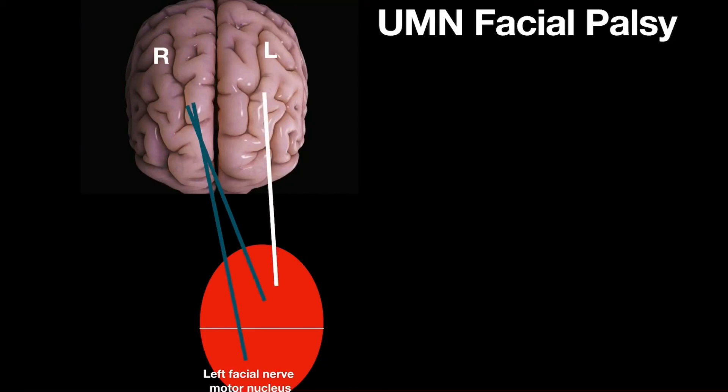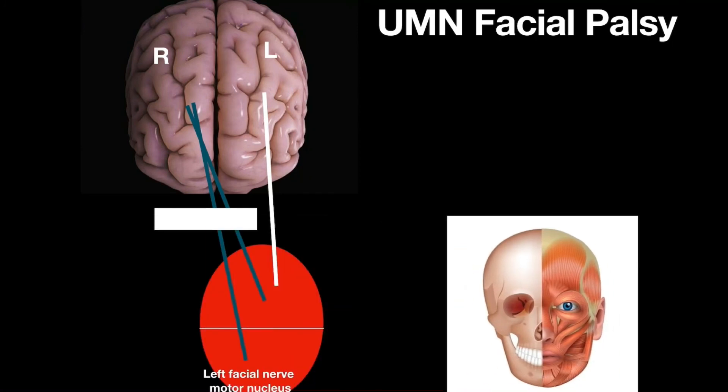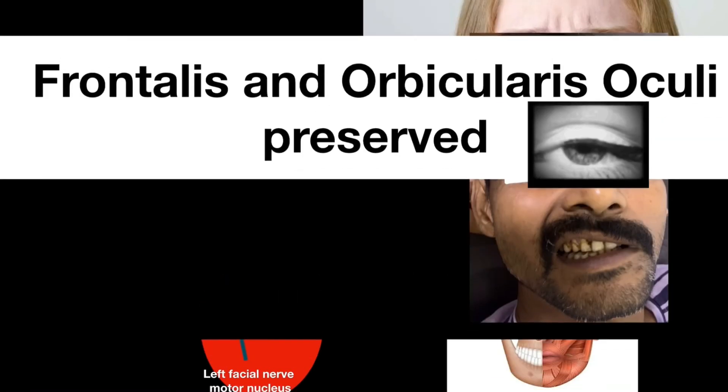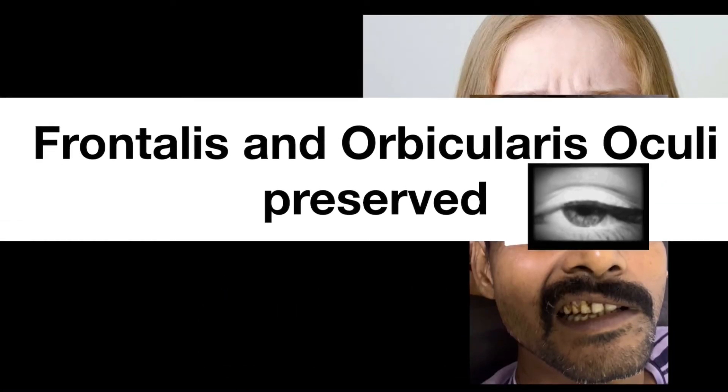Suppose there is a lesion in corticonuclear tracts on one side of the brain. Then the lower part of face which receives innervation only from one side of the brain is lost. While the upper part of face which receives innervation from both sides is intact. As a result, frontalis and orbicularis oculi functions are preserved.